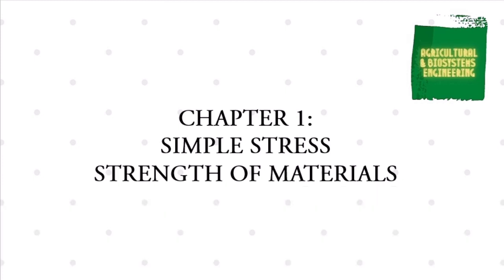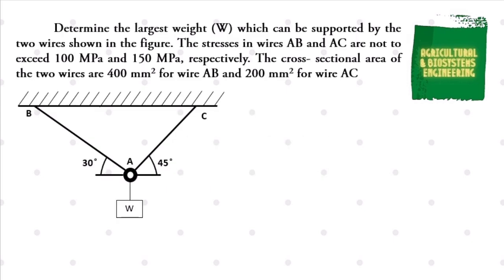In this video, we will be solving this problem. Determine the largest weight W which can be supported by the two wires shown in the figure. The stresses in wires AB and AC are not to exceed 100 MPa and 150 MPa, respectively. The cross-sectional area of the two wires are 400 square millimeters for wire AB and 200 square millimeters for wire AC.